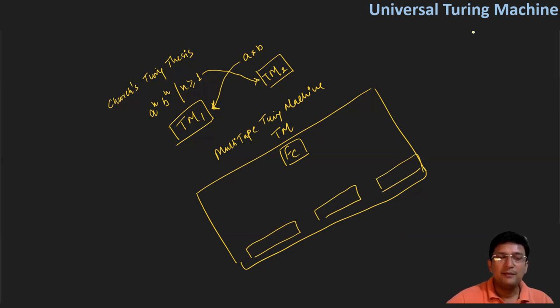So this is the first part of the machine. It represents the Turing machine's representation. The second part is the input. The third part is the internal state. So this is the finite controller. This is the three tapes.